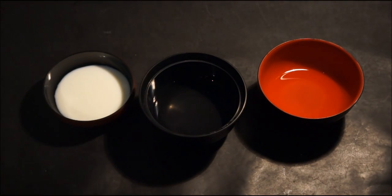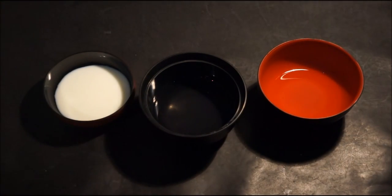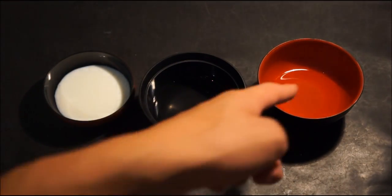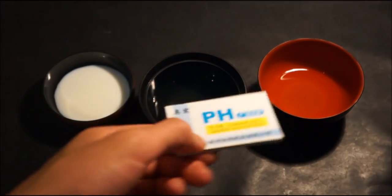These are pH strips that measure the acidity level of liquids. I have three different liquids here: milk which is a base, water which is just my control group, and vinegar which is my acid. These are very basic materials I just found around the house.